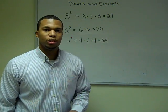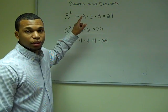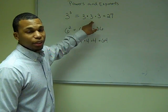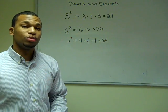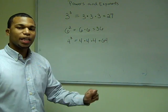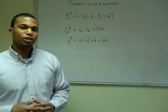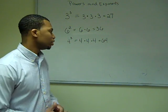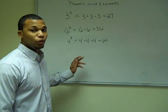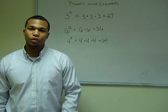Here are some more examples. If I had three to the third power, that's the same thing as saying three times three times three, which is equal to twenty-seven. If I had six to the second power, that's the same thing as saying six times six, which is thirty-six. And if I had four to the third power, that's the same thing as four times four times four, which is equal to sixty-four.